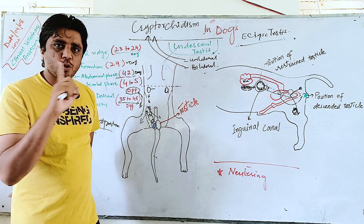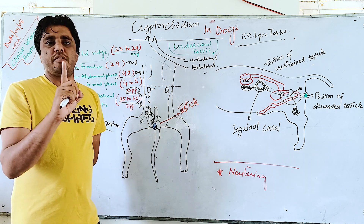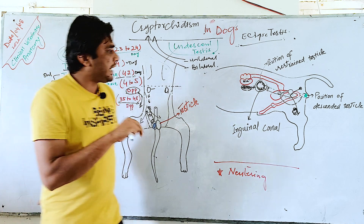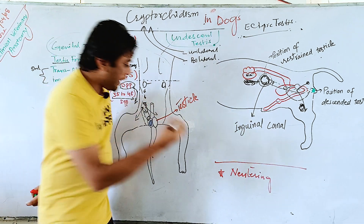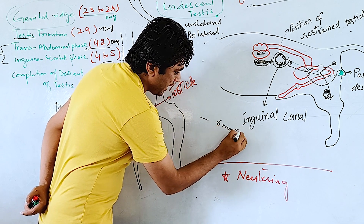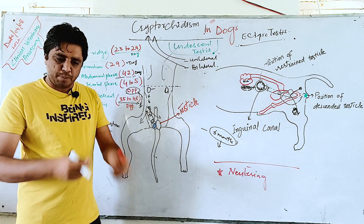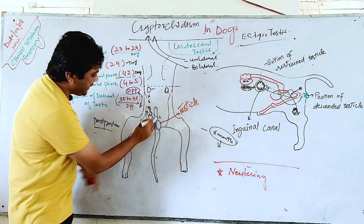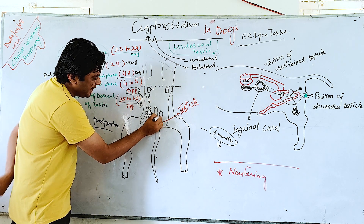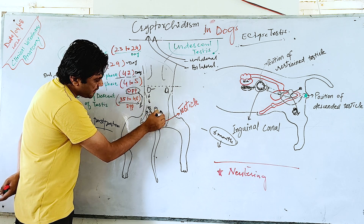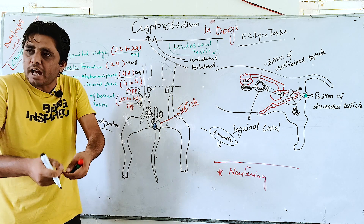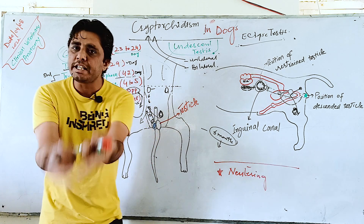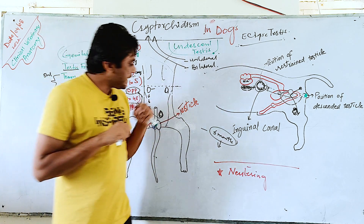When a case of cryptorchidism comes to you, first check the age: up to two months of age in a puppy it is normal for testes to not yet be descended. Even in dogs you can wait up to six months. You can palpate and gently push the testes — they may not be in the normal position but could be alongside the inguinal canal or near the penis area. After 50 days, a gentle push may help, and up to six months testes can normally descend in dogs.